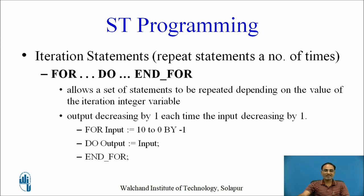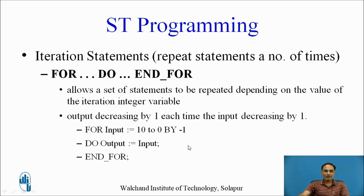Next are the iteration statements, which repeat for a number of times. The first iteration statement is FOR-DO, which allows a set of statements to be repeated depending on the value of an iteration integer. For example: FOR Input := 10 TO 0 BY -1 DO Output := Input END_FOR. This loop gives an output decremented by 1 each time the input decrements by 1.